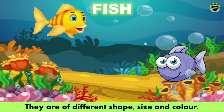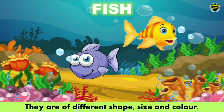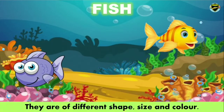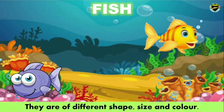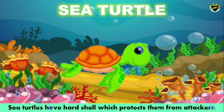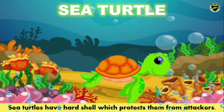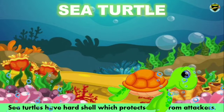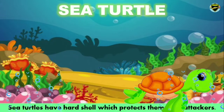Fish. They are of different shape, size, and color. Sea turtle. Sea turtles have a hard shell which protects them from attackers.